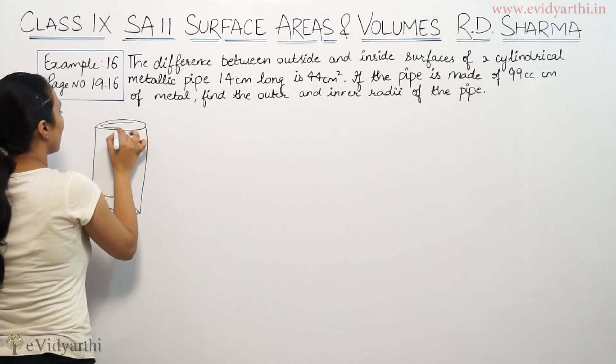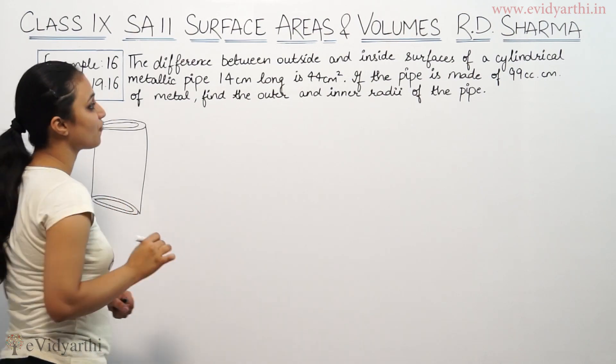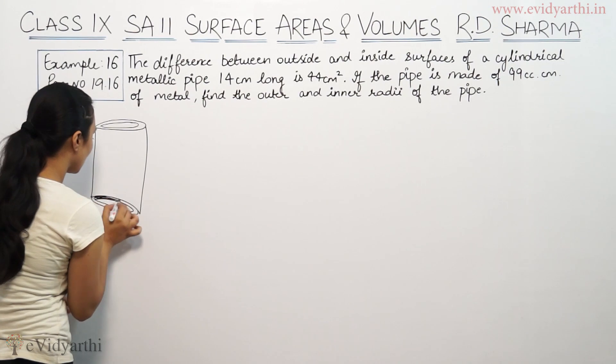It's the inside and outside surface area difference that's given, which is 44 cm². Inside surface area, outside surface area.